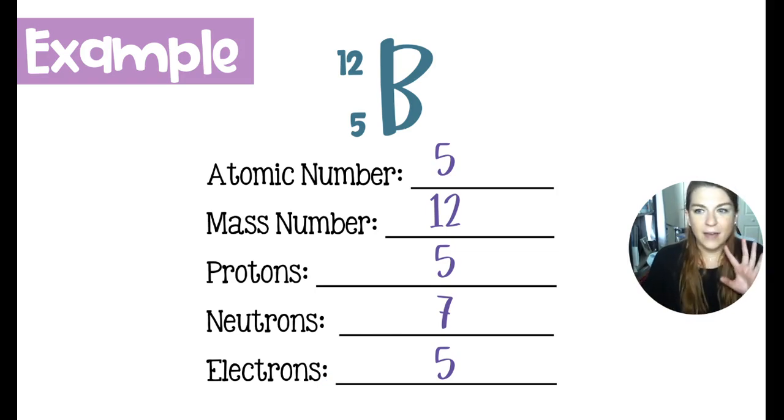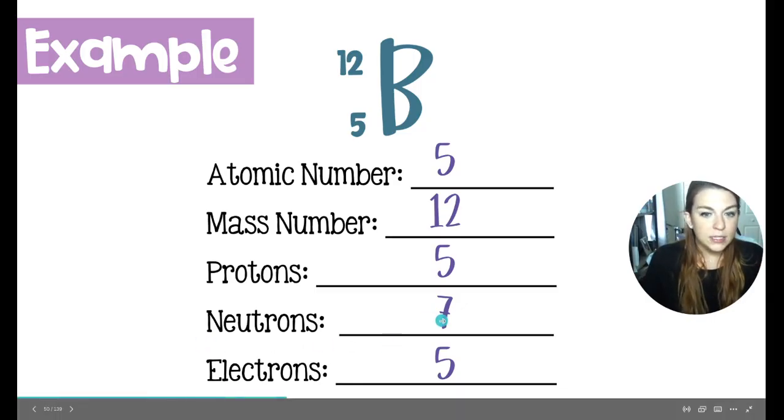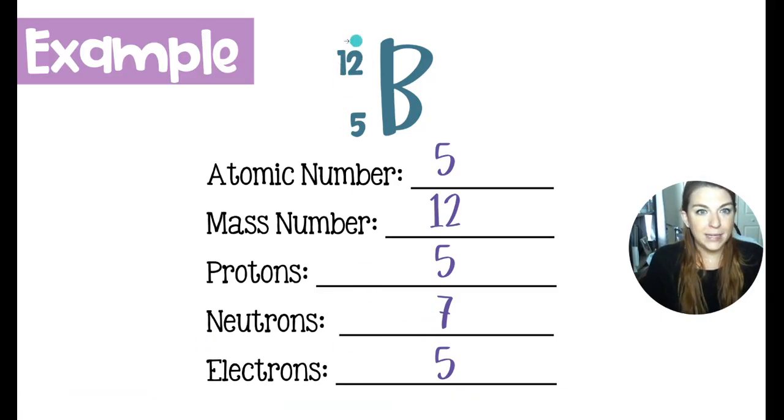The neutrons is where you have to think a little bit. You can't just read. The neutrons are determined by taking the mass number of 12, 12 things in the nucleus, minus the five that we know are protons, which leaves us with seven neutrons.